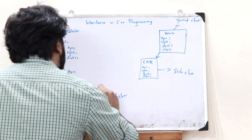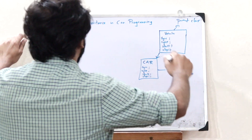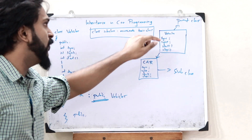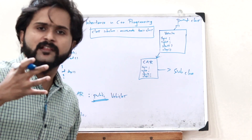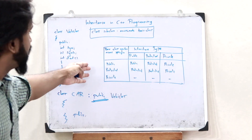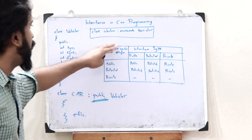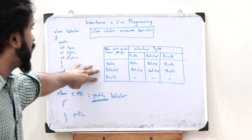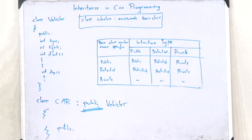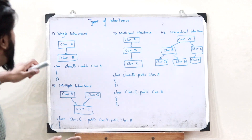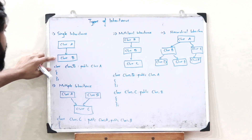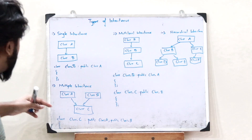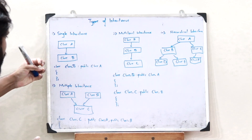If inheritance is declared as private, both protected and public members of the base class go to private in the derived class. That is the significance of specifying the access mode. The basic syntax of inheritance is: first declare the subclass name, then specify the access mode after a colon, then write the name of the base class. This table shows how the access mode determines under which access specifier data members and member functions will go during inheritance. Next, let us see the types of inheritance. The first is single inheritance — a single class B inherits properties from a single class A.